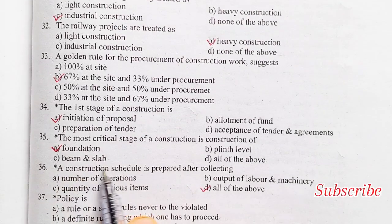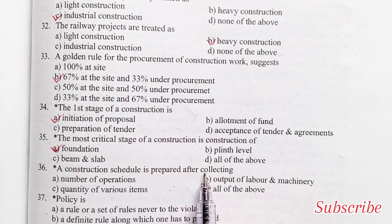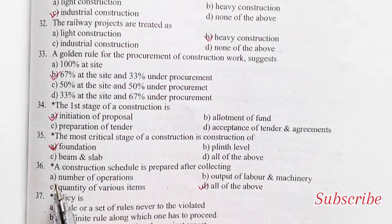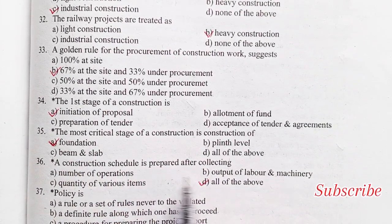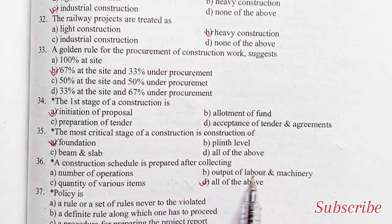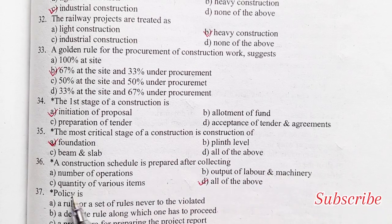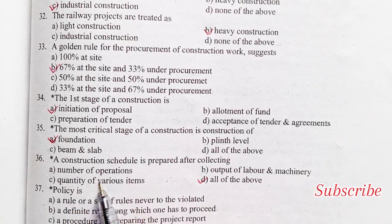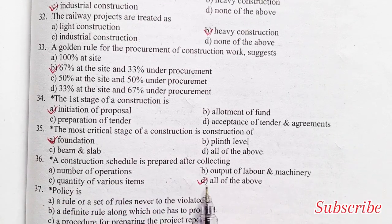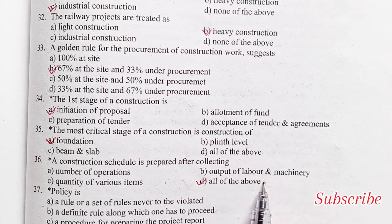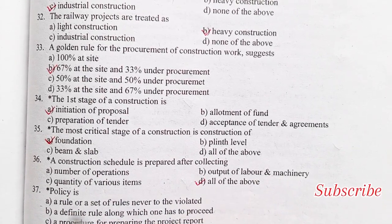Construction schedule is prepared after collecting: number of operations, output of labour and machinery, quantity of various items, all of the above. The right answer is option D — all of the above.